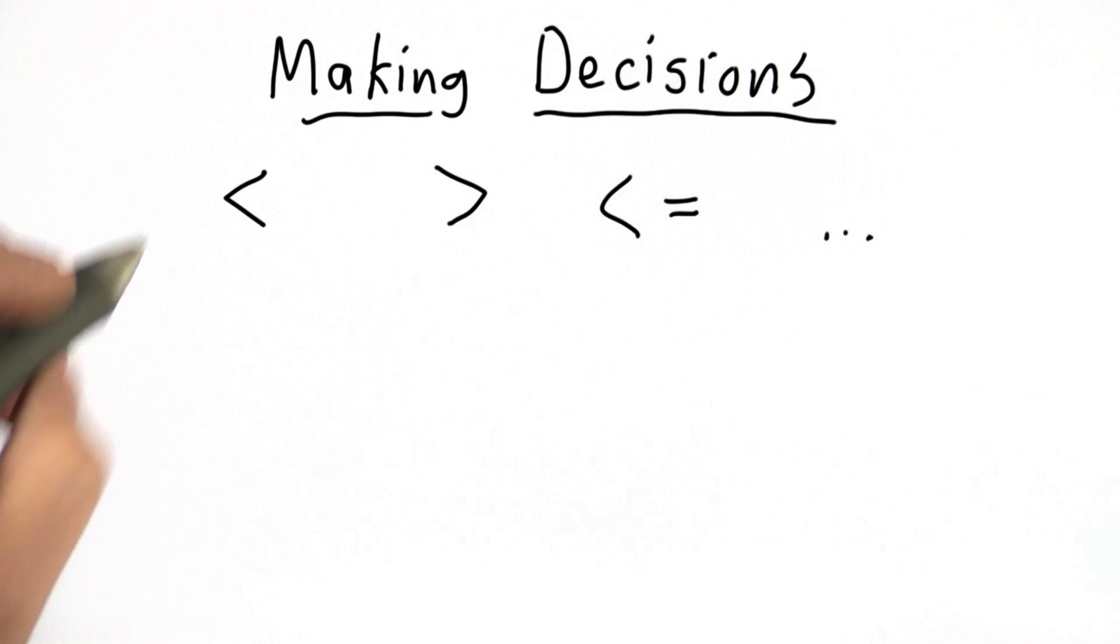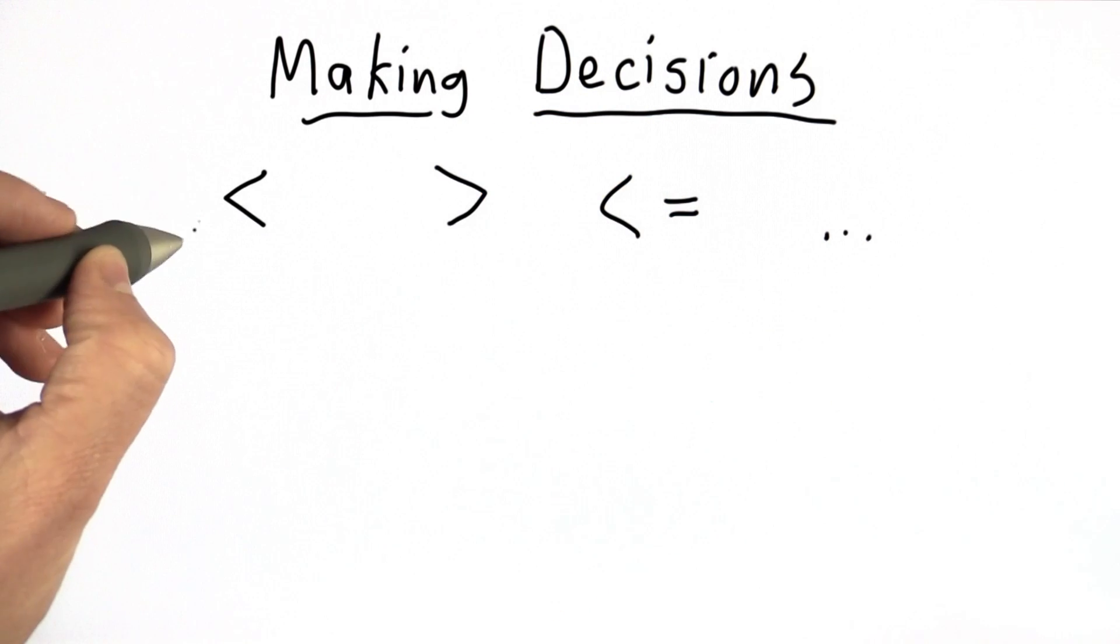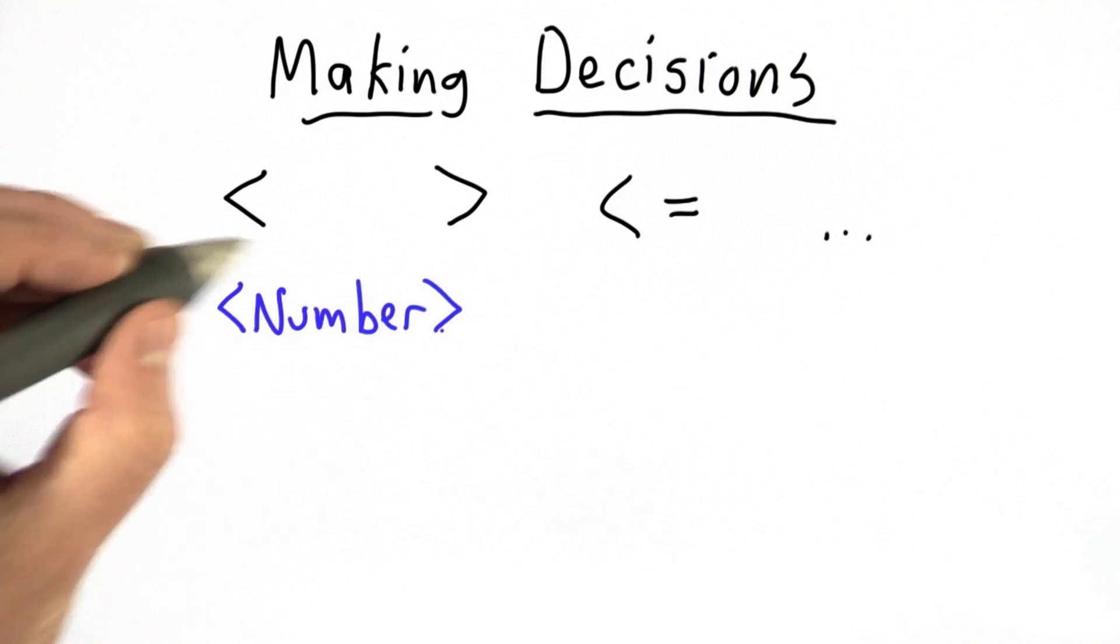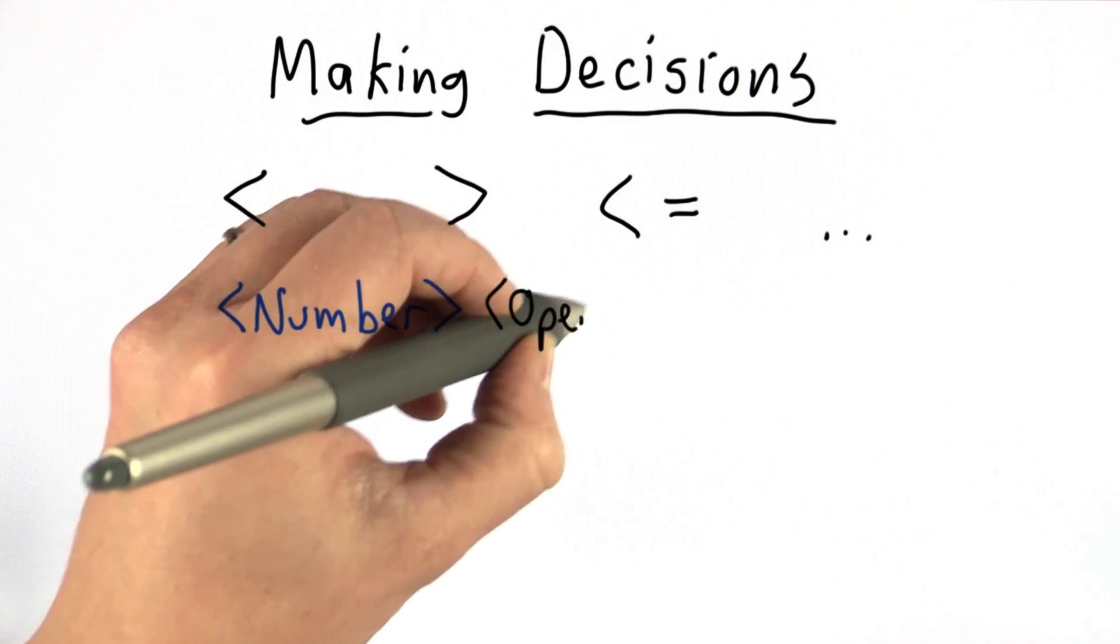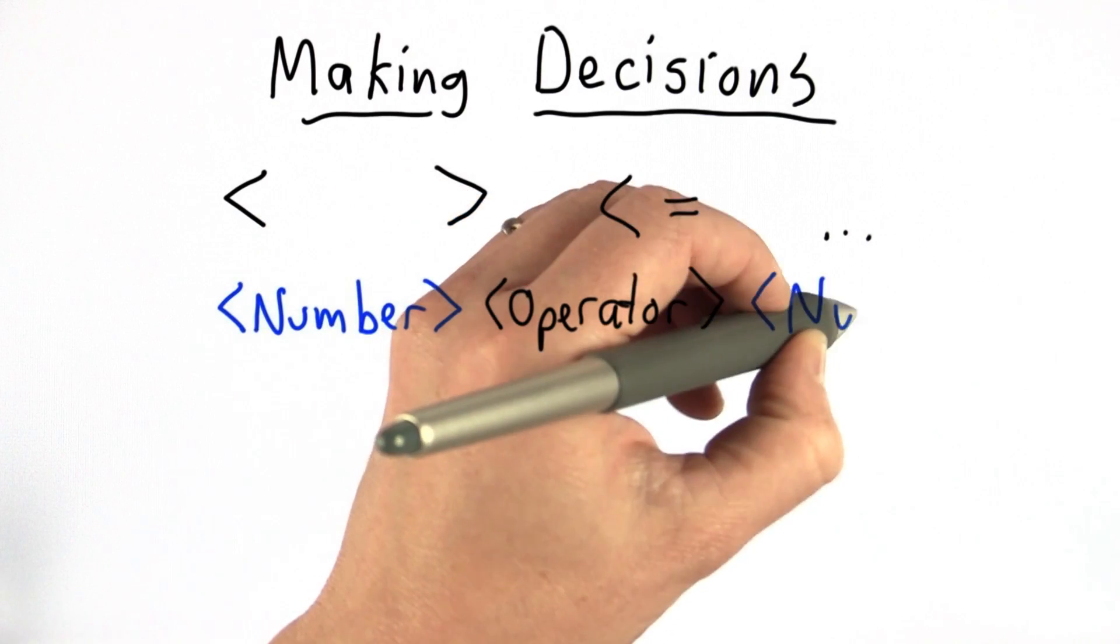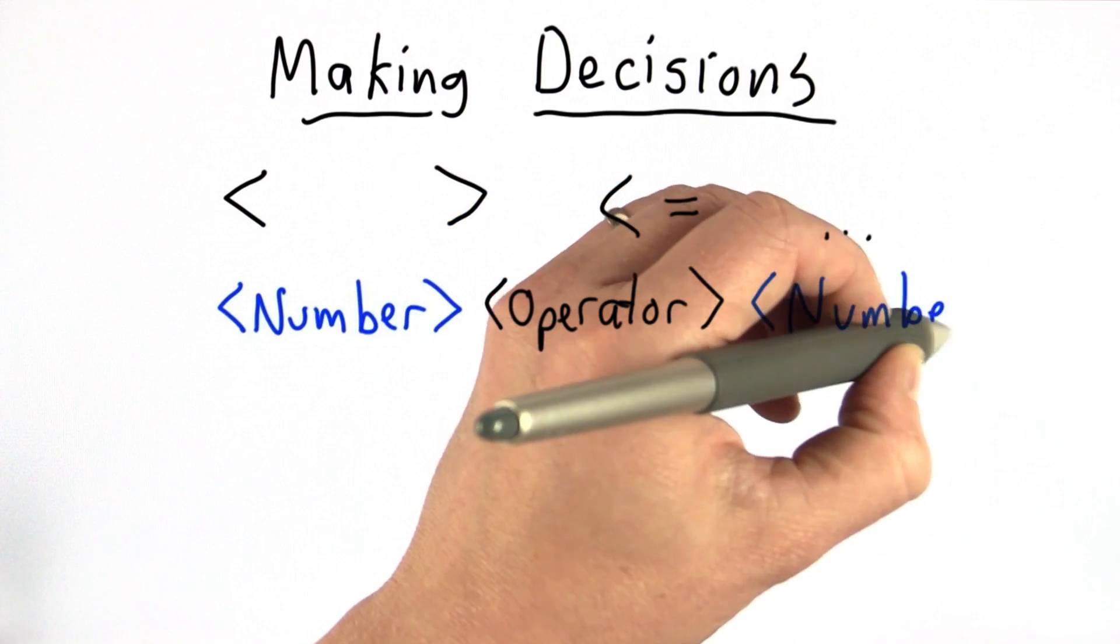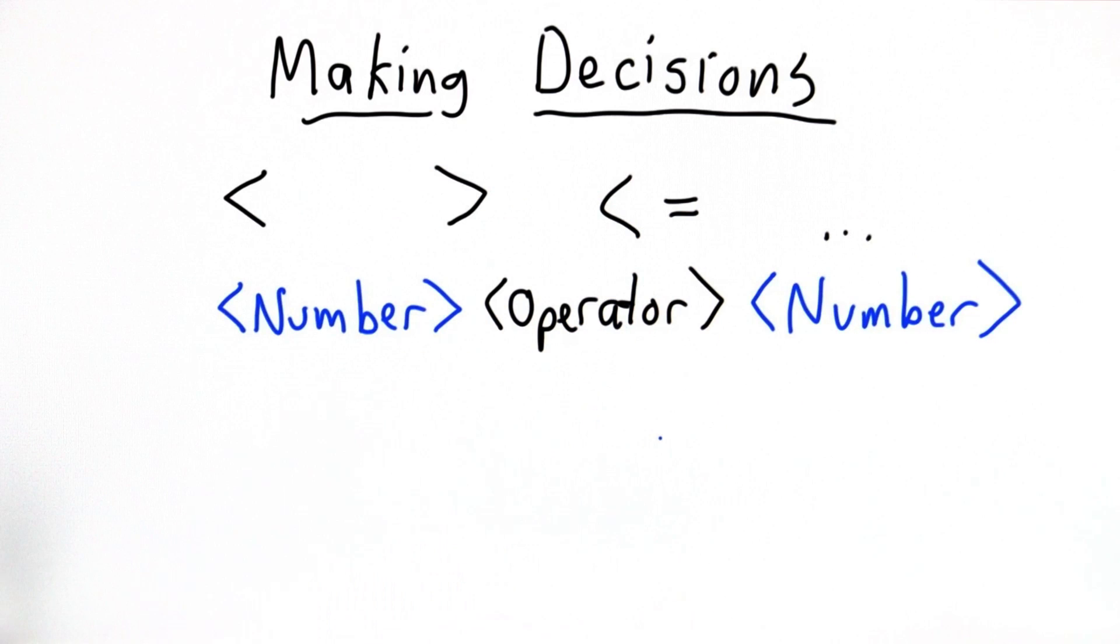All of these operate on numbers. So we can have a number followed by a comparison operator followed by another number. This is very similar to the grammar we saw earlier for arithmetic expressions. But now instead of having a plus or times, we can have something that does a comparison.